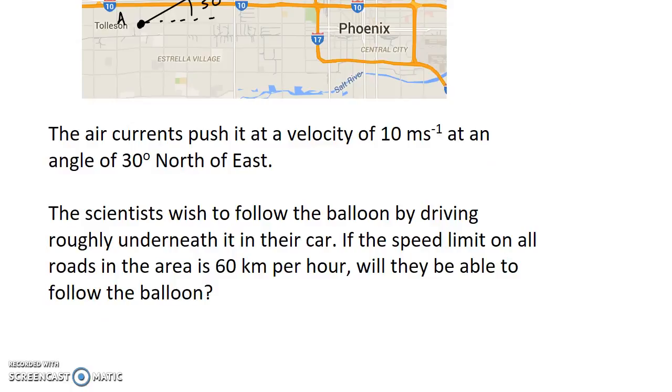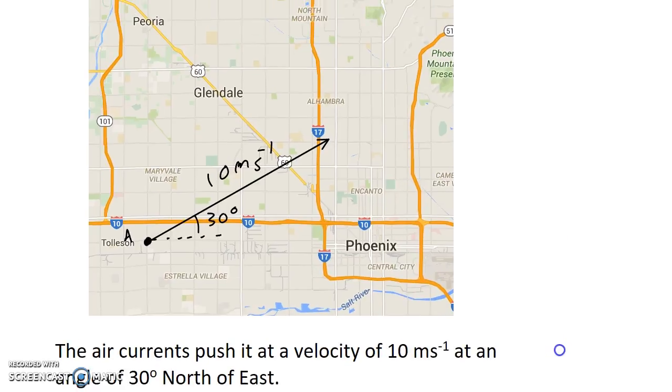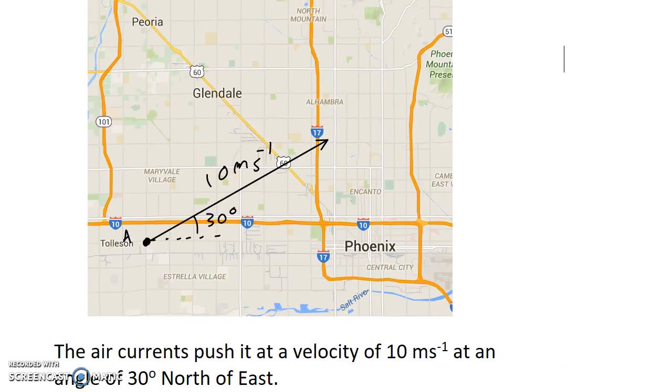The scientists want to follow the balloon by driving roughly underneath it in their car. But they're in Phoenix, and the layout of all the roads in Phoenix is square. So if they want to follow the balloon, which is traveling at an angle, they have to go across east-west roads and north-south roads to follow it that way.